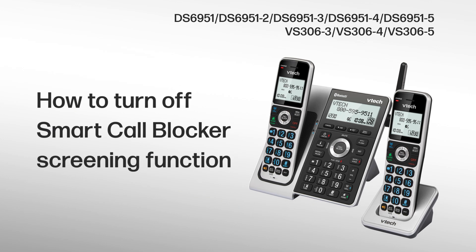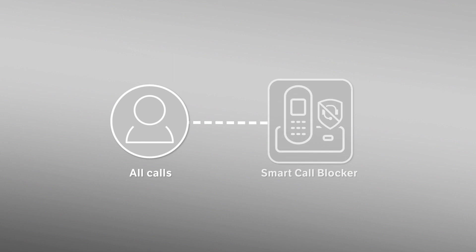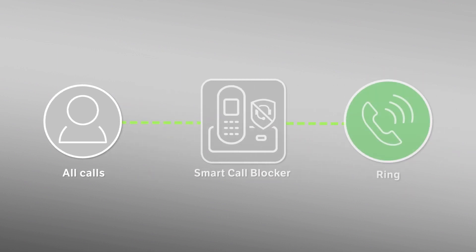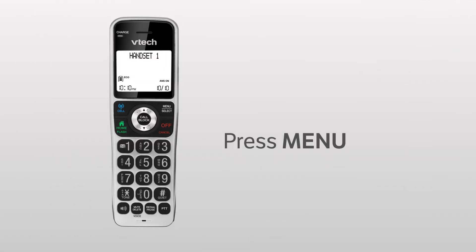Want to turn off the Smart Call Blocker Screening Function? Turning off the Smart Call Blocker allows you to receive all calls, including numbers on the block list. You can turn it off in the Smart Call Blocker settings.